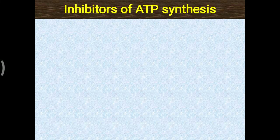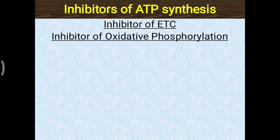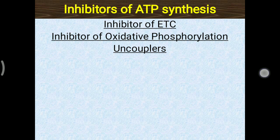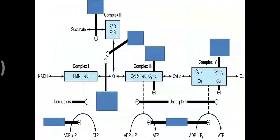Today's topic is about inhibitors of ATP synthesis, which are broadly categorized into three groups: inhibitors of the electron transport chain, inhibitors of oxidative phosphorylation, and uncouplers. Oxidative phosphorylation is a coupled reaction needed for ATP synthesis. The electron transport chain is coupled with phosphorylation, and together they are called oxidative phosphorylation.